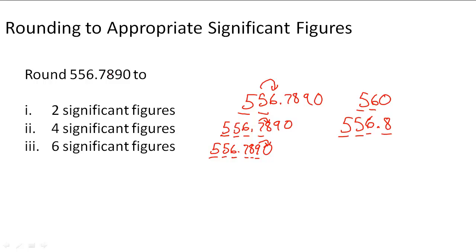Since it's less than five, we round down, which means we keep this number the same. So the answer is 556.789. This has one, two, three, four, five, six significant figures.